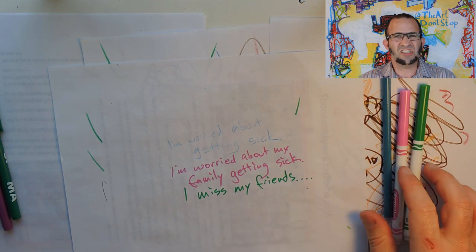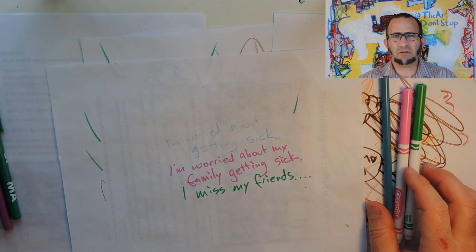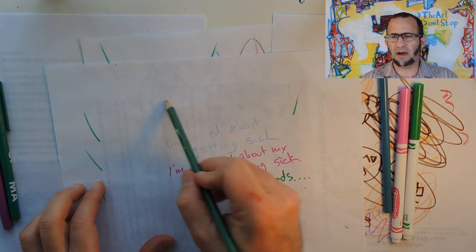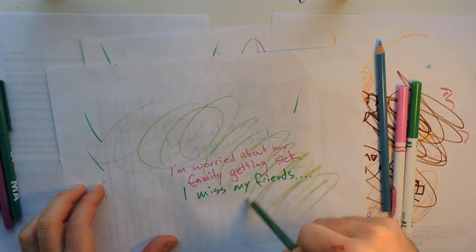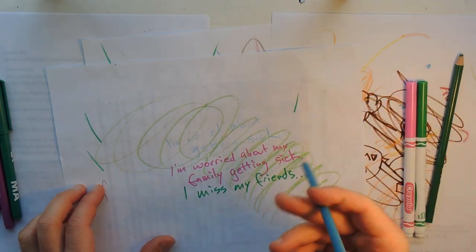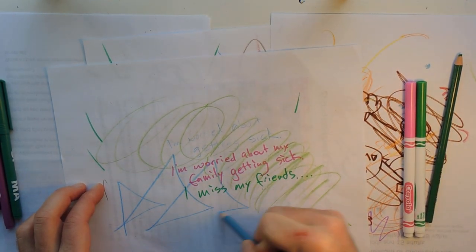That's how we get over worry and anxiety. And another way to get over it, is just to recognize those feelings, just scribble it out. So we just take, try the different materials, the different colors.